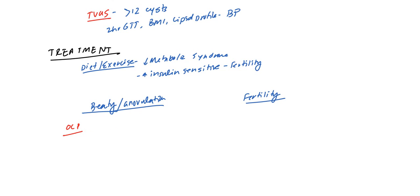What does this do? Primarily, the first reason why we give this is because if they have unopposed estrogen, this leads to endometrial hyperplasia, which can lead to endometrial cancer. So you want to avoid that.